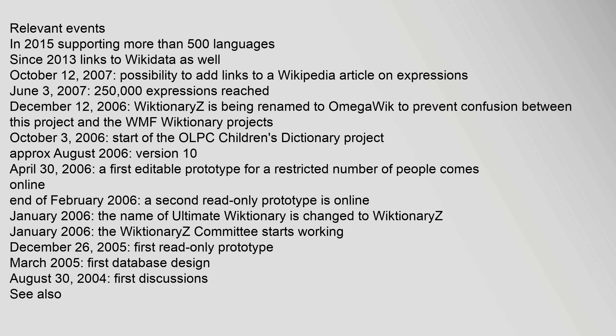Relevant events: In 2015, supporting more than 500 languages. Since 2013, links to Wikidata. October 12, 2007: possibility to add links to a Wikipedia article on expressions. June 3, 2007: 250,000 expressions reached. December 12, 2006: Wiktionaries is being renamed to OmegaWiki to prevent confusion between this project and the WMF Wiktionary projects. October 3, 2006: start of the OLPC Children's Dictionary project. Approximately August 2006: version 1.0. April 30, 2006: a first editable prototype for a restricted number of people comes online. End of February 2006: a second read-only prototype is online. January 2006: the name of Ultimate Wiktionary is changed to Wiktionaries.